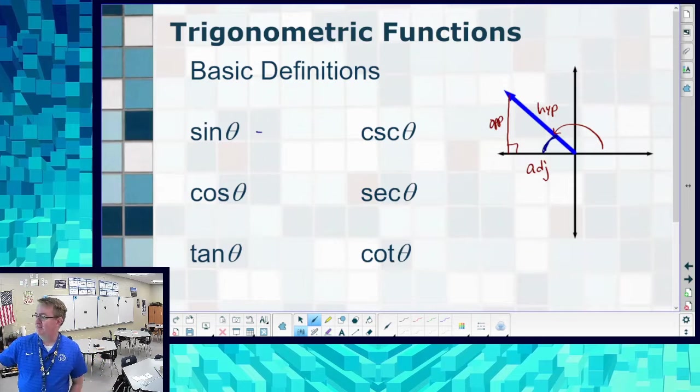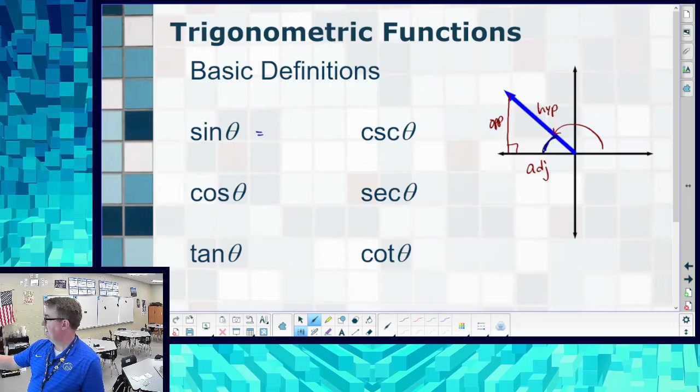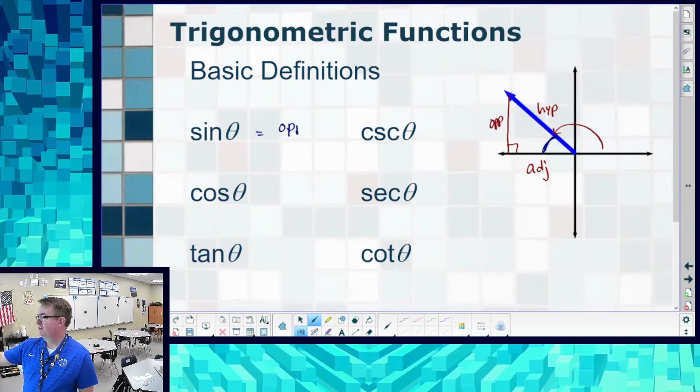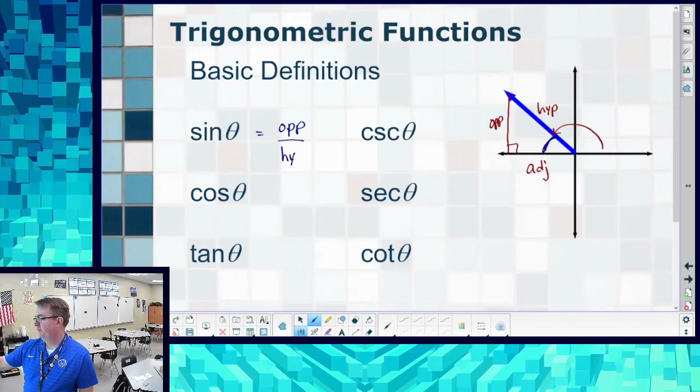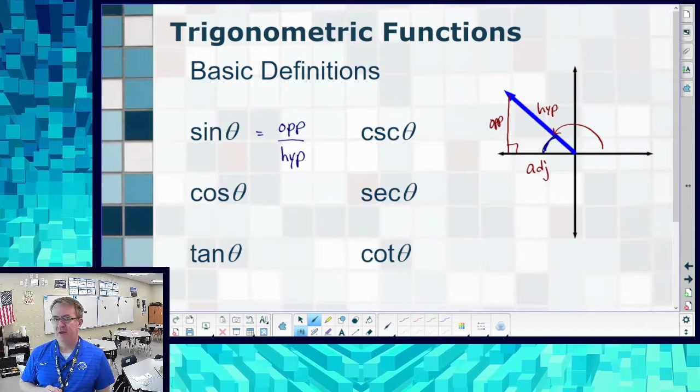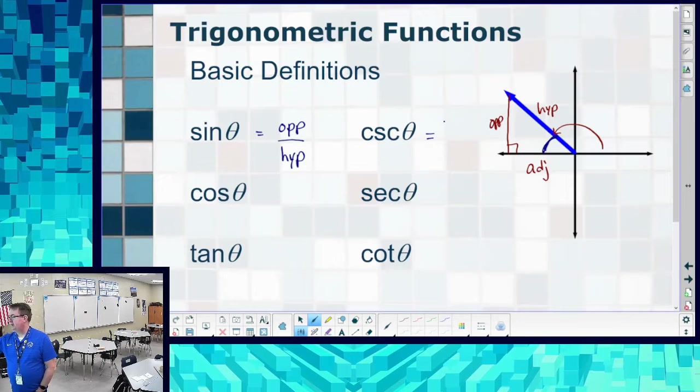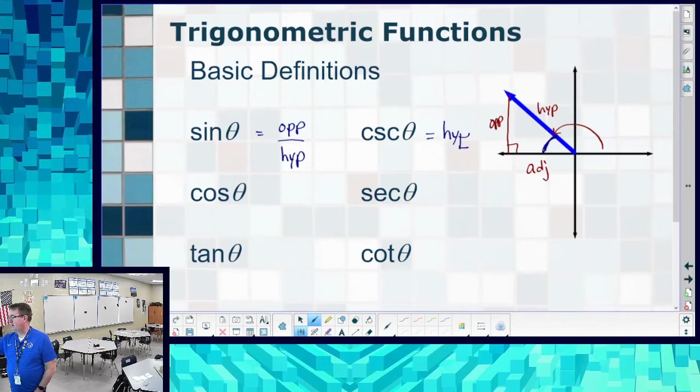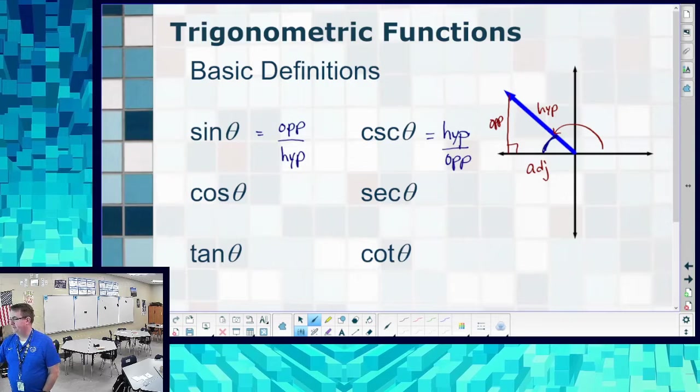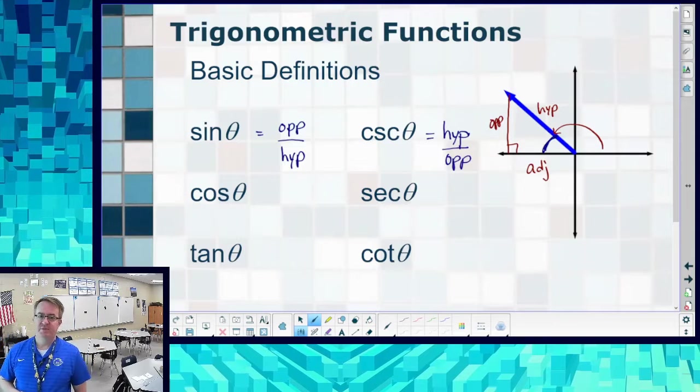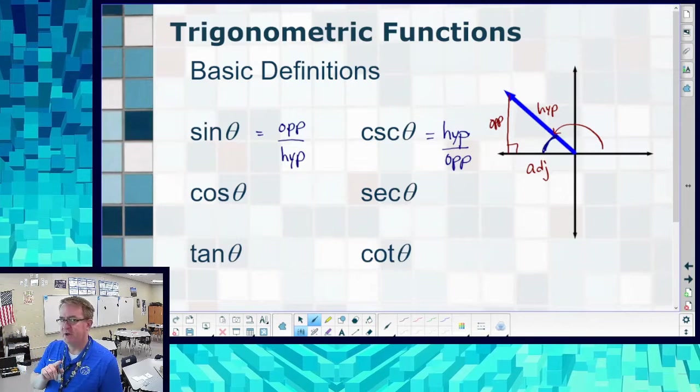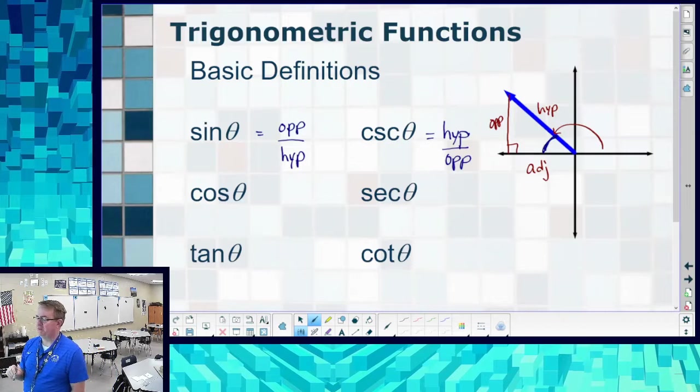We know we have sine. Let's go back and recover those. Sine is opposite over hypotenuse. And cosecant is related to sine, but it's going to run hypotenuse over opposite. Now, don't say they're opposite of each other because they're not, but we'll talk about that when we get done with this slide.